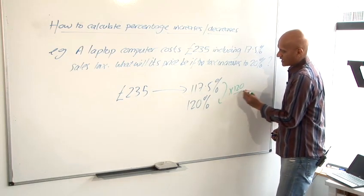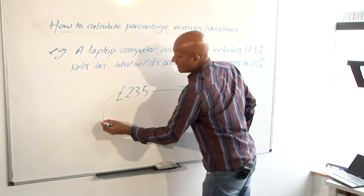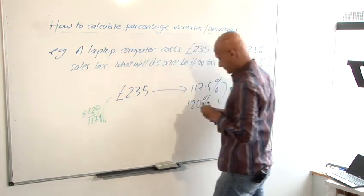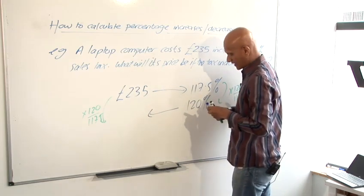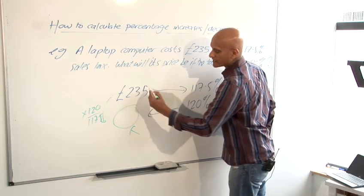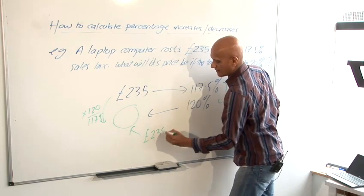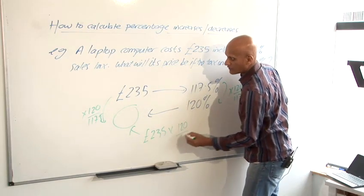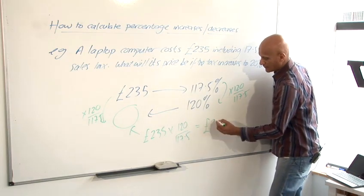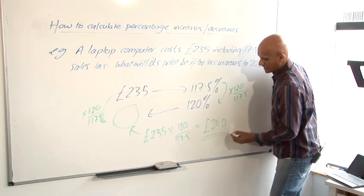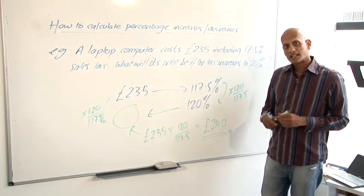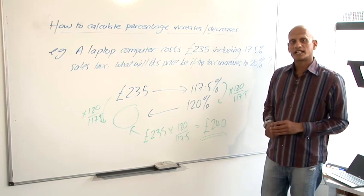Multiply by 120 over 117.5. Our answer which would go here would be found by following this calculation, 235 pounds times 120 over 117.5 and that gives us our answer again using the calculator of 240 pounds and that's the correct price if the tax rate were to increase and that's the scale factor method, best method for dealing with these types of questions.